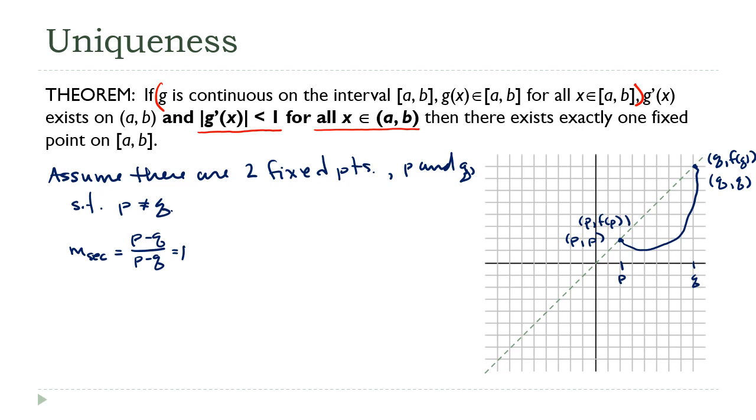Now because my function is continuous, remember the mean value theorem from back in first semester calculus. The mean value theorem says that there must be a point on this interval somewhere where the slope of the tangent line at that point is equal to the slope of the secant line. All right, so let's say that point is r. So remember what the mean value theorem says is that f prime of r is equal to the slope of the secant line. But the slope of the secant line, that's one. So the theorem says f prime of r equals one, but that's our contradiction. Right, because remember back up here we assumed, we required that the derivative has to be strictly less than one.